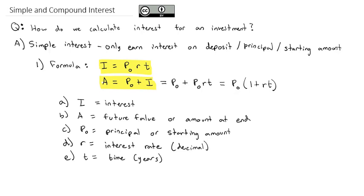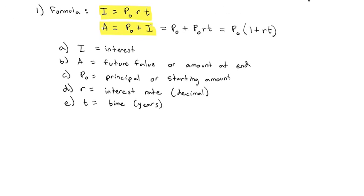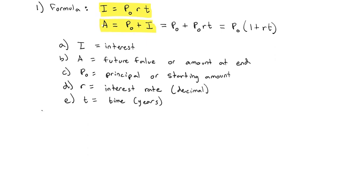So let's do one quick example. It's an easy formula. I think we only need to see one example where we can use this formula. Let's say a $500 investment earns 6% simple interest for three months.